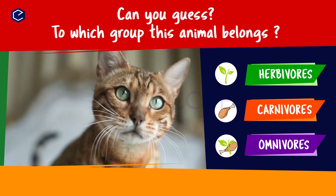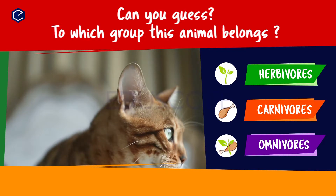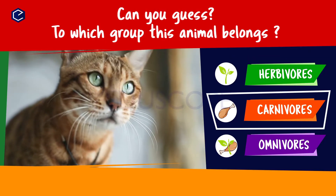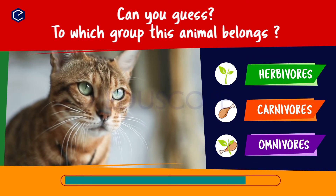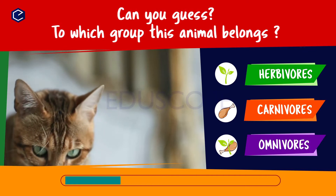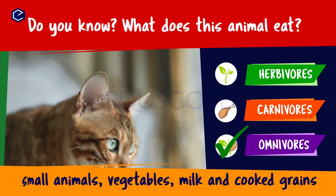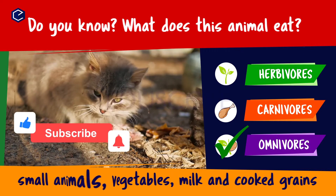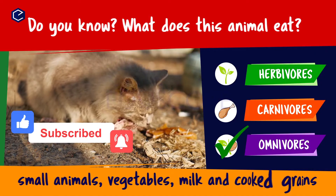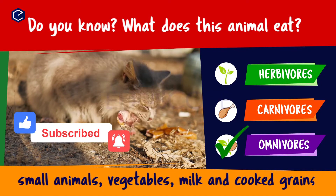Can you guess to which group this animal belongs? Do you know what this animal eats? A cat eats small animals, vegetables, milk and cooked grains, so it is an omnivore.